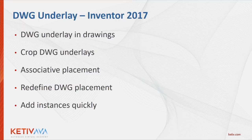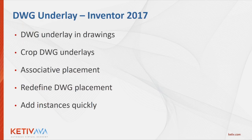With 2017, they added the ability to include DWG underlay information in Inventor drawing views, and they added the ability to crop DWG underlays so you can focus on just the portion you want for the specific instance placed in your part or assembly. They also added associative placement — if the origin point changes based on geometry changes, the DWG underlay moves along with the model. They added an easy way to redefine DWG placement and a right-click shortcut to add a new instance.